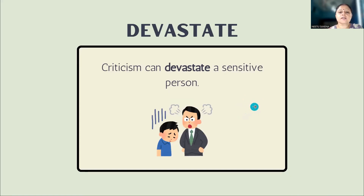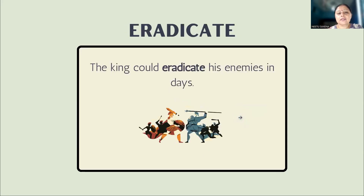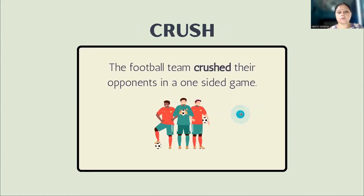Agar aap kisi ko criticize karein toh ek sensitive person ko woh khatm kar sakta hai. Next word: 'slaughter' — the sheep had to be slaughtered. Slaughter ka bhi wahi matlab hai: destroy kar deena, khatm kar deena. 'Eradicate' — eradicate ka bhi wahi matlab hai: finish kar deena, khatm kar deena, nashd kar deena. For example: the king could eradicate his enemies in days.